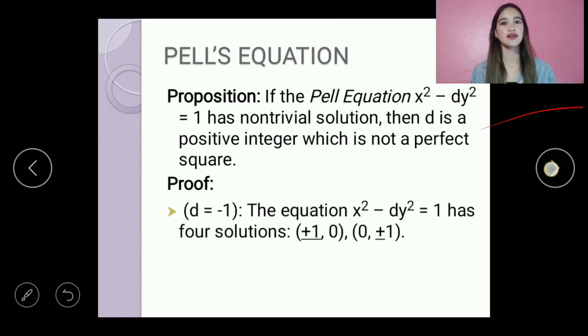Okay, so here's the proof. If d equals negative 1, the equation x squared minus dy squared equals 1 has four solutions. These are positive or negative 1, 0, and 0, positive or negative 1.